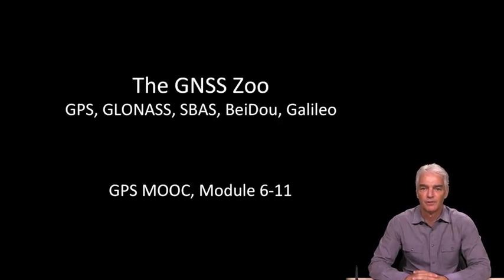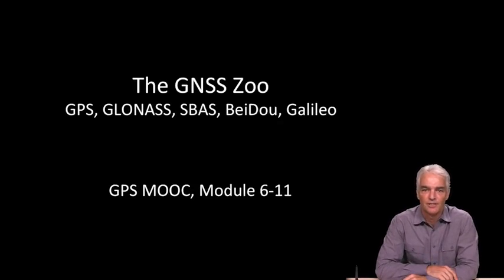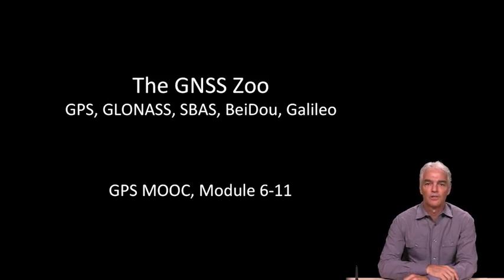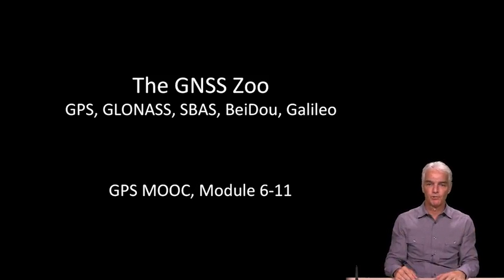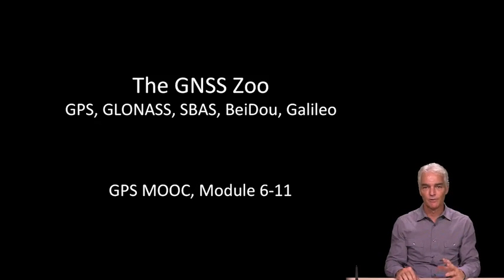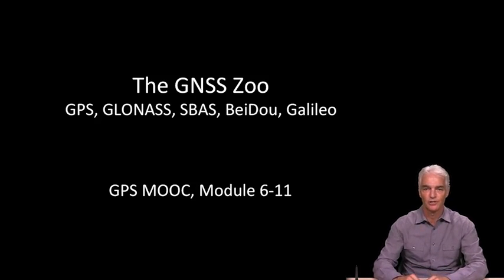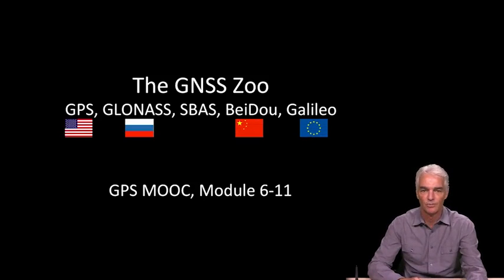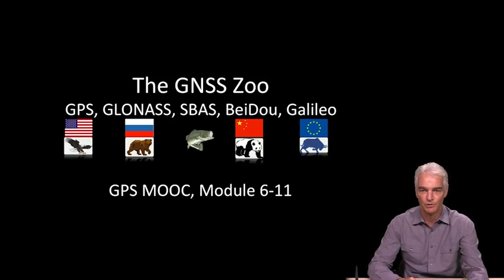Welcome to module 611 of the GPS MOOC. This is the last technical module of the last week, and then the only thing left after this is one more of the GPS in our lives short interludes. What we're going to do in this video is summarize everything we've been looking at through this week — all the different constellations and the information we've learned about all these different GNSS constellations — and tabularize this information. We call this the GNSS zoo, and because it's a zoo, we put some animals associated with each of the different constellations.